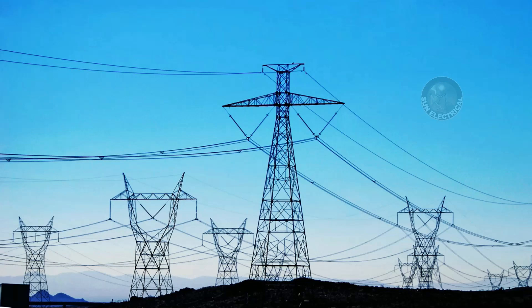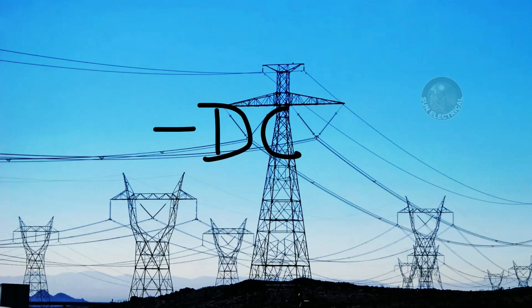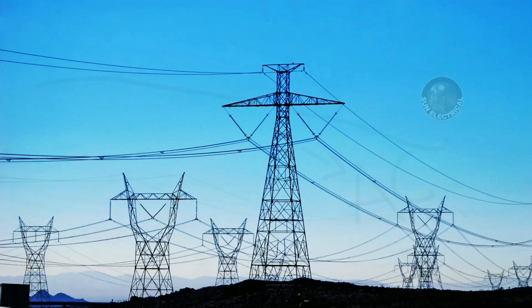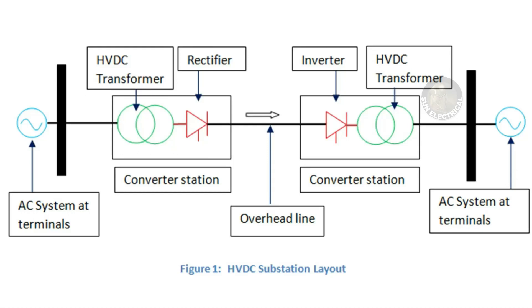The power of AC and DC can be converted. The transmission of DC and AC can be converted. So the power of AC can be converted. There is no HVDC substitution, so the power of AC can be converted.